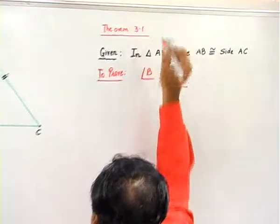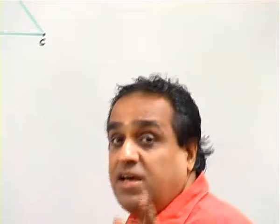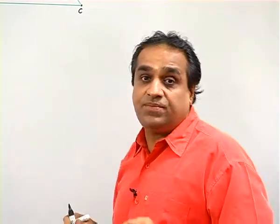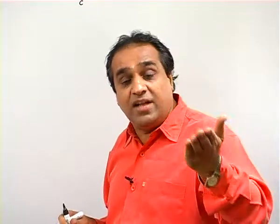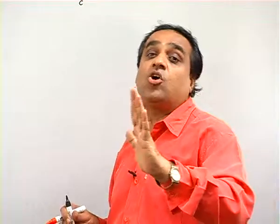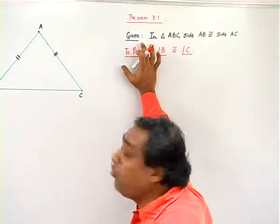And what is the theorem of 3.1? What is the statement? It says that if any two sides of a triangle are congruent, then the angles opposite them are congruent. So we start with the proof of this theorem.